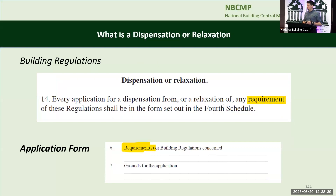Similarly, in Article 14 of the building regulations, every application for a dispensation from or a relaxation of any requirement of these regulations shall be in the form set out. The application form itself asks you what requirement of the building regulations are concerned and what are we dispensing.